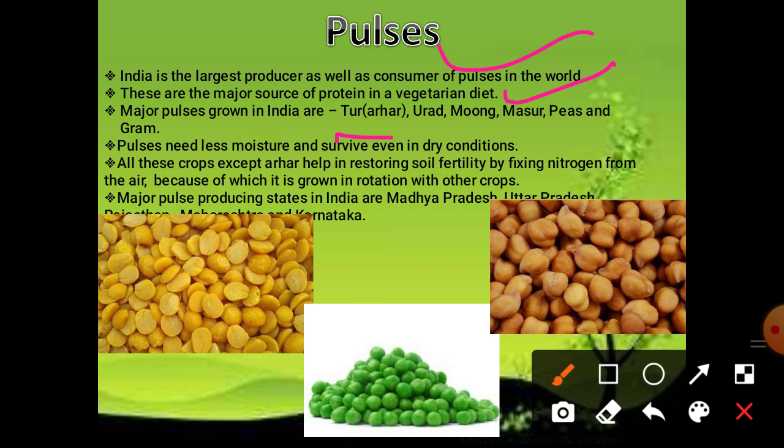Pulses need less moisture and can survive in drier conditions, making them very important for a country like India where there is uncertainty of monsoon and limited irrigation. All these crops except arhar help in restoring soil fertility by fixing nitrogen from the air, because of which they are grown in rotation with other crops. For nitrogen fixation, Rhizobium bacteria are found in the nodes of pulse plants. However, in arhar there is no availability of Rhizobium bacteria, so arhar does not participate in atmospheric nitrogen fixation.